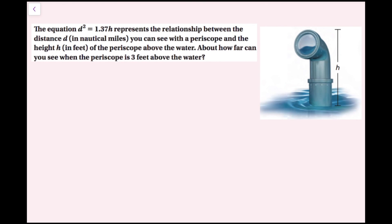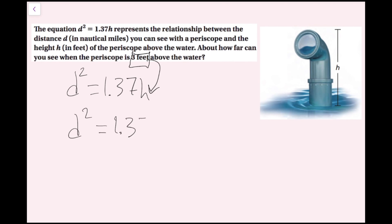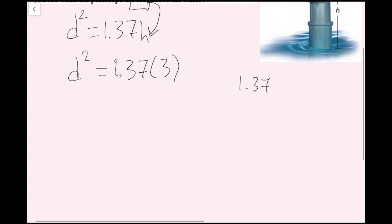The equation d squared equals 1.37h represents the relationship between the distance d in nautical miles you can see with a periscope and the height h in feet of the periscope above the water. About how far can you see when the periscope is 3 feet above the water? Plugging h equals 3 into the equation: d squared equals 1.37 times 3. Multiplying gives d squared equals 4.11.